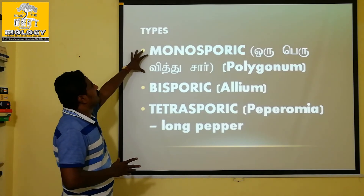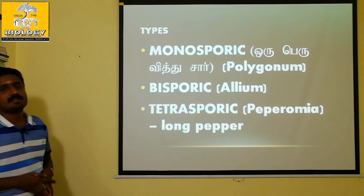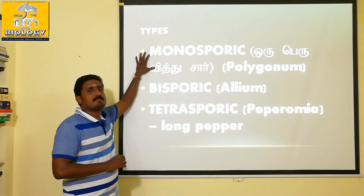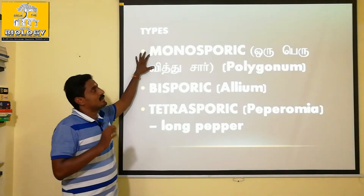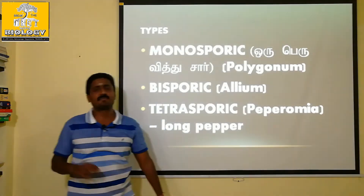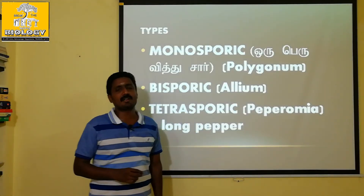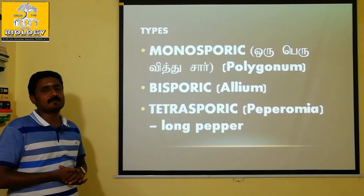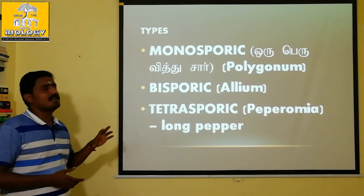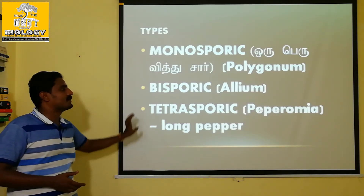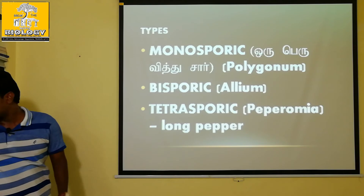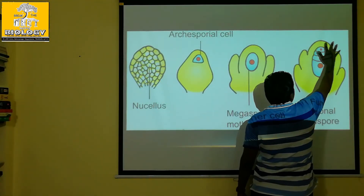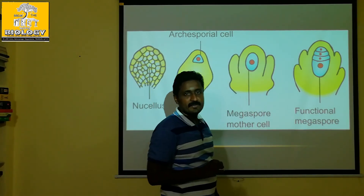We learn three types: Monosporic, Bisporic, and Tetrasporic. The Monosporic type is represented by the Polygonum type of embryo sac development.